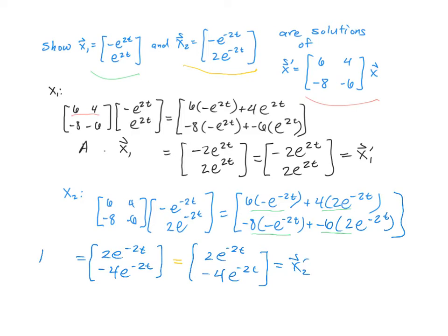So we've shown that A times x2 is equal to x2 prime. Again, the goal of this problem is to show that the two solution vectors do the job and work — it is not to actually calculate them. That will be coming up in upcoming sections.